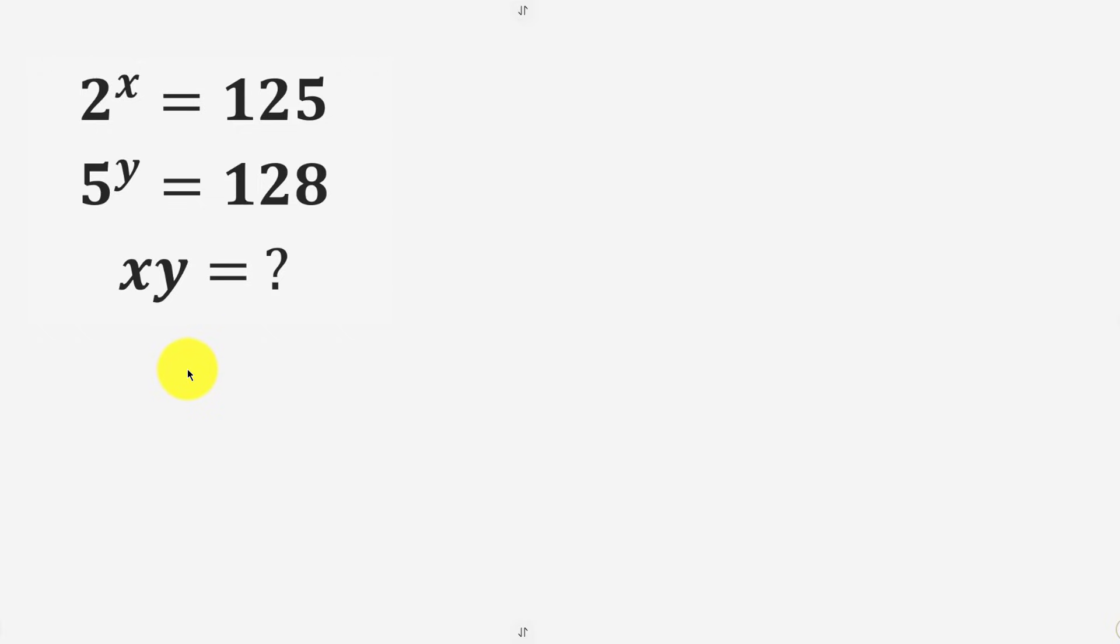What's going on everybody? Welcome back to the channel. We have this problem that says find the value of x times y given that 2 to the power of x is equal to 125 and 5 to the power of y is equal to 128.